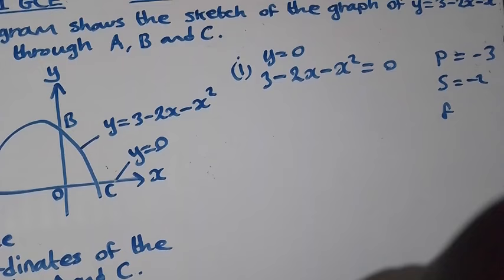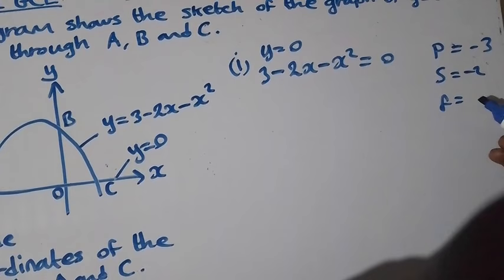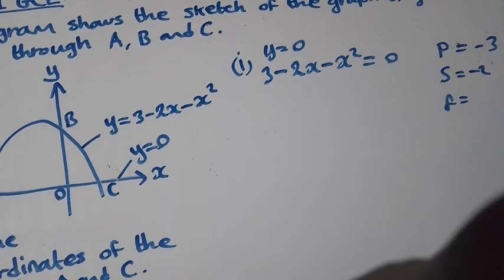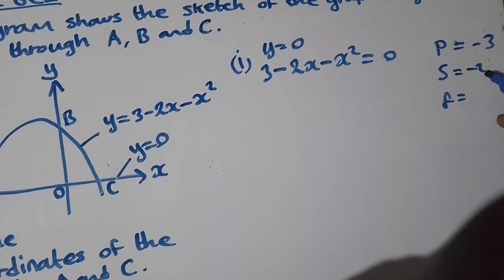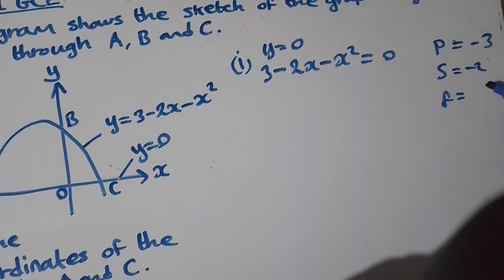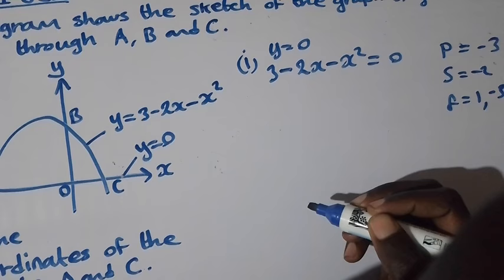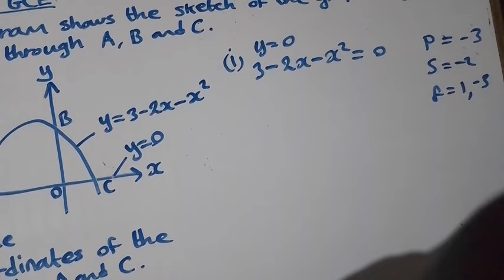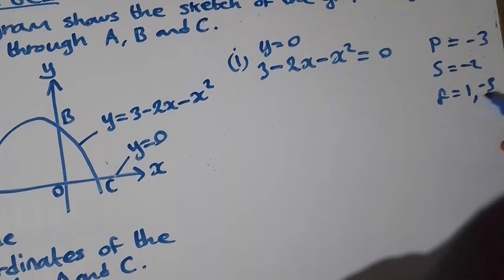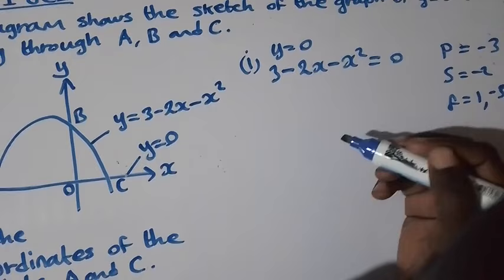For the factors, we need two numbers that multiply to give the product of negative 3, and when added together give the sum of negative 2. The factors are 1 and negative 3, because 1 × (−3) = −3 and 1 + (−3) = −2. So these are our factors.